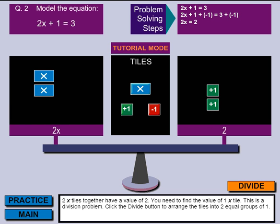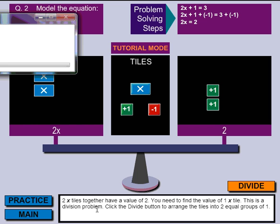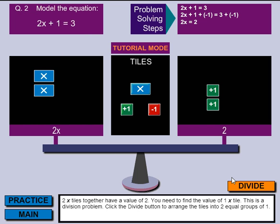I'm going to go back to this and move on to my next step. So next it says two x tiles together have a value of 2. You need to find the value of one x tile. This is a division problem. And click the divide button to arrange the tiles into two equal groups of 1.